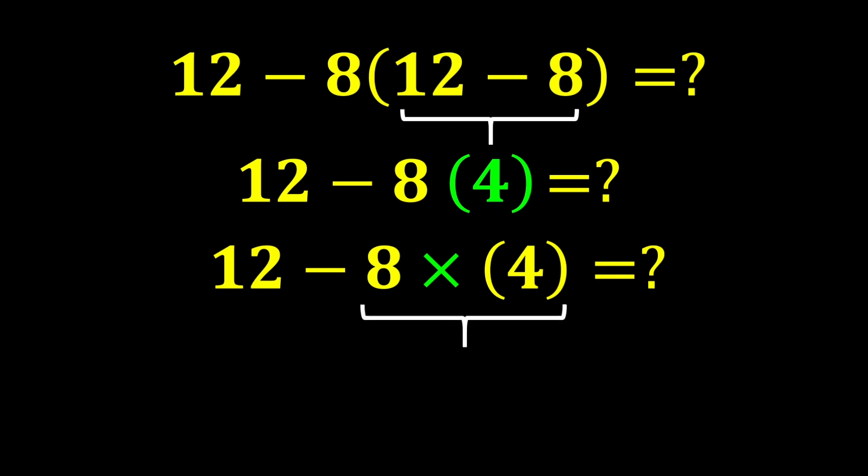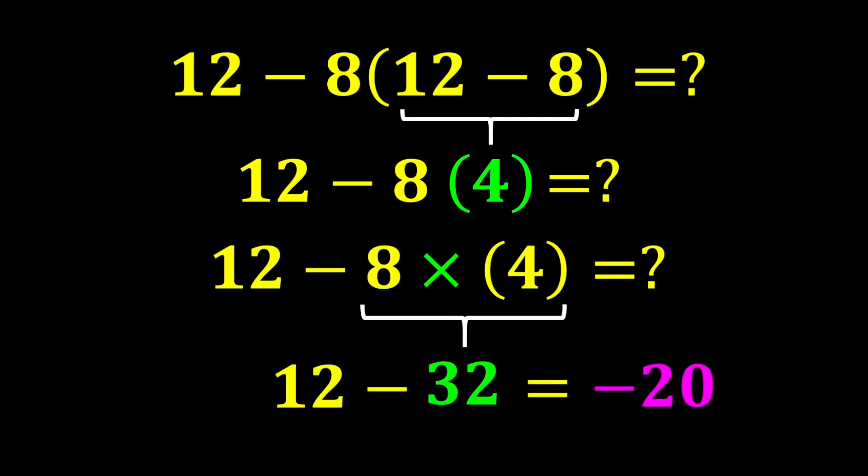Now, in this expression we have a subtraction and a multiplication. Since multiplication has a higher priority, we perform it first. 8 times 4 gives us 32. Finally, we calculate 12 minus 32, which gives negative 20. So, negative 20 is our final answer.